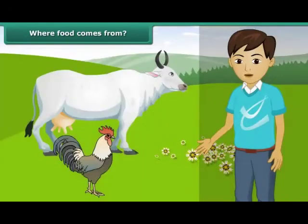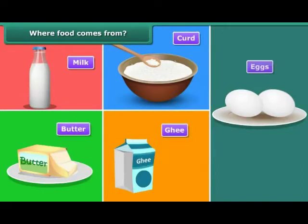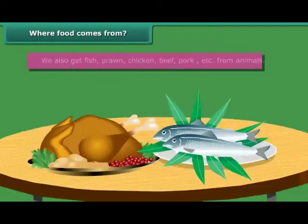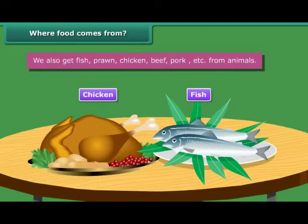Some of the food we also get from animals, like milk, curd, butter, ghee, eggs, etc. We also get fish, prawn, chicken, beef, pork, etc. from animals.